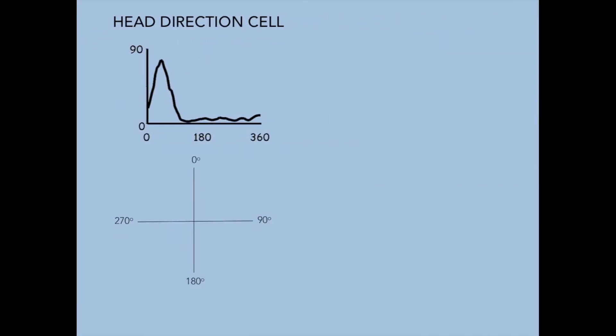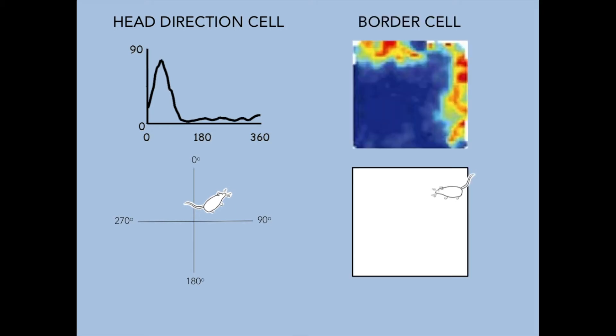Head direction cells only fire when the animal is facing a certain direction and border cells only fire at the border of a room.